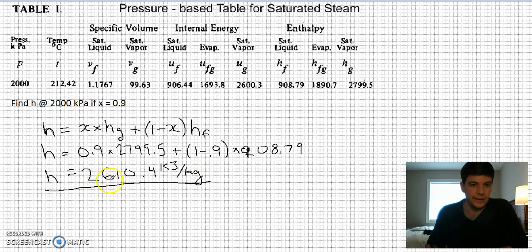What I want to do is take a reality check once I found my value. I know that it has to be inside of this range somewhere. All the way on the extreme left side would be 908, on the extreme right side would be 2799. I know that I'm closer to this side because it's 90% the way across, 90% steam. If I look at my value 2610.4, first of all it is in between these two numbers, so it's within that gap. And then it's much closer to the saturated side. So I'm feeling pretty confident that what I've got is the right value.